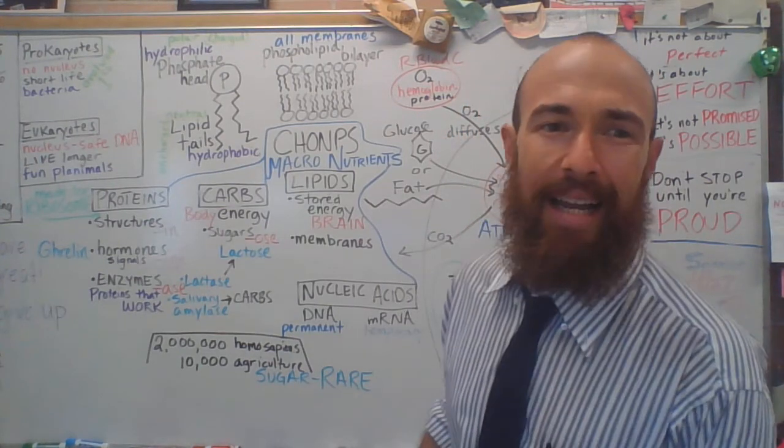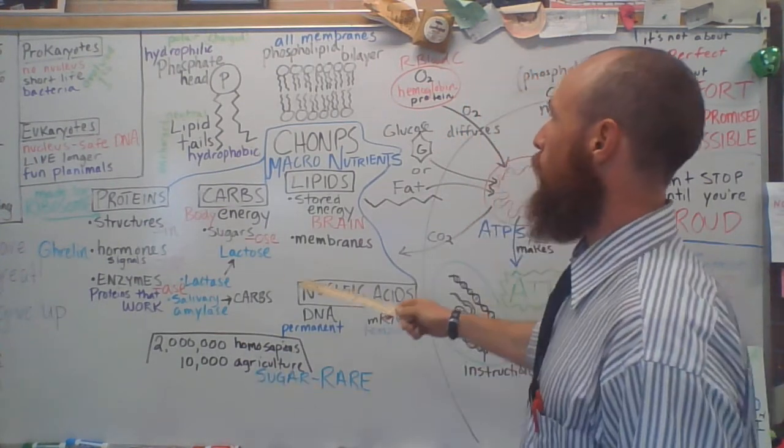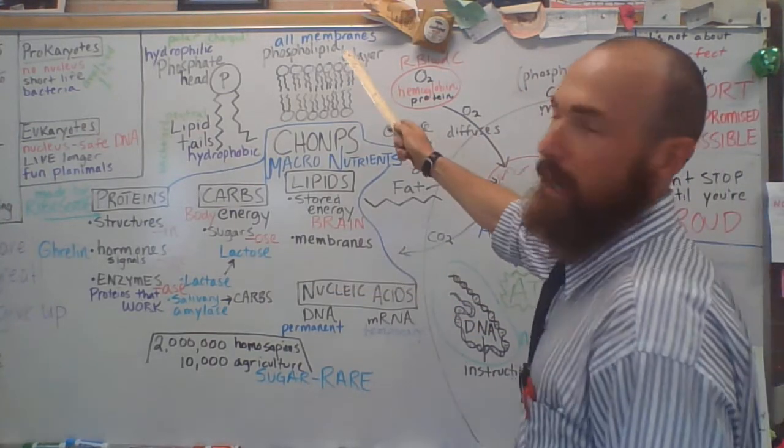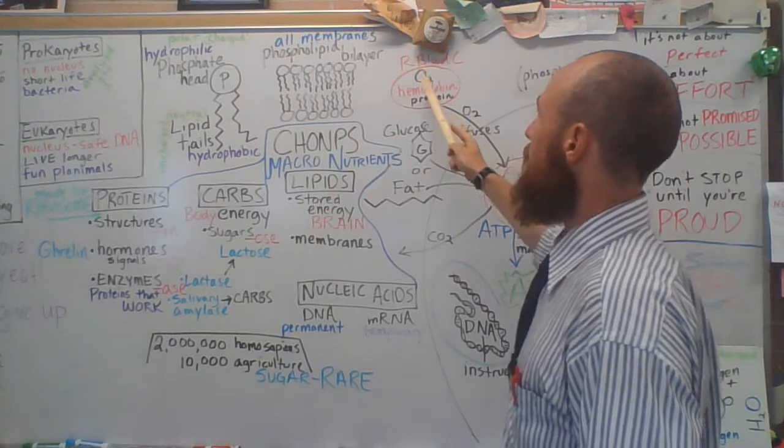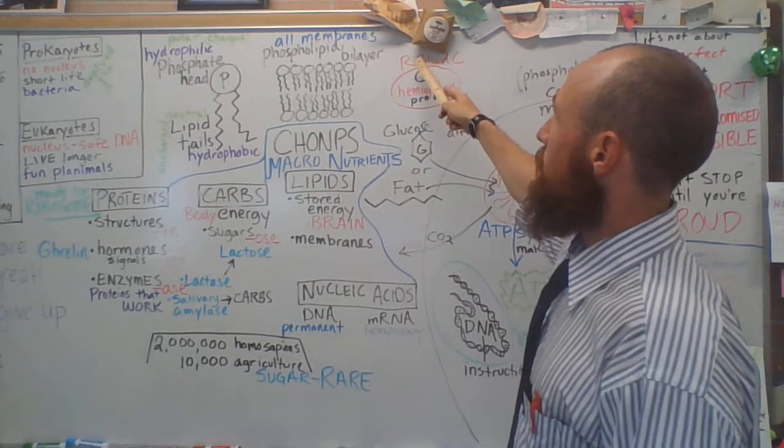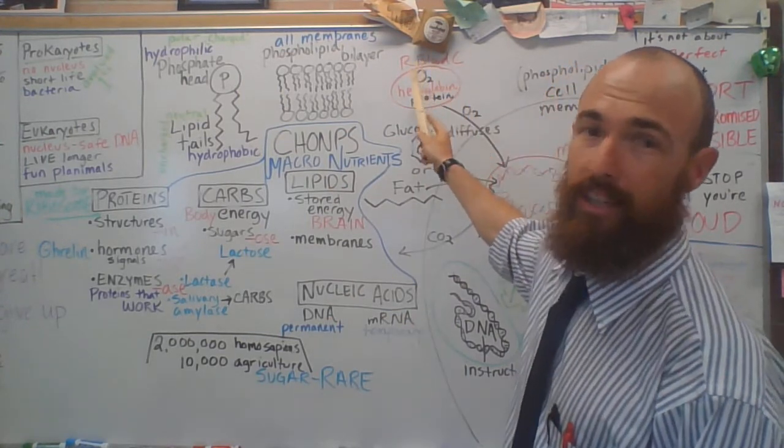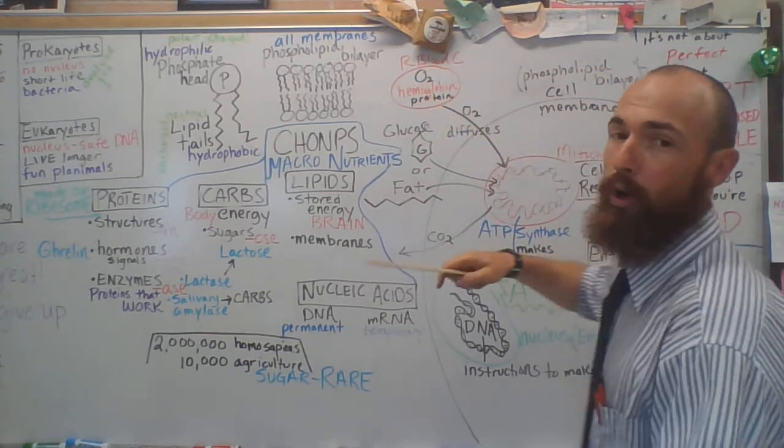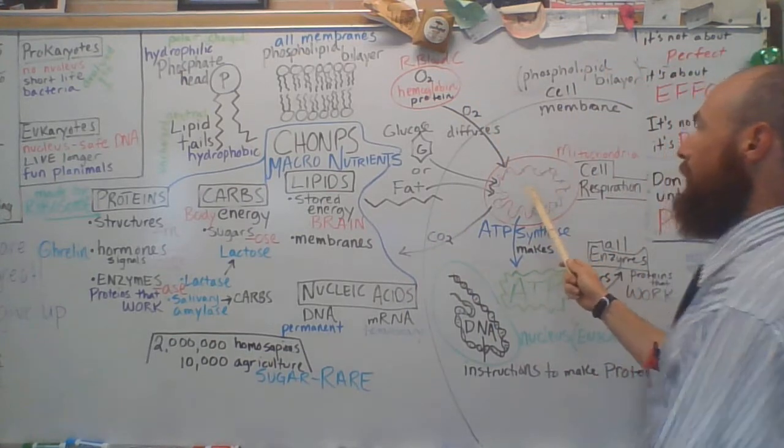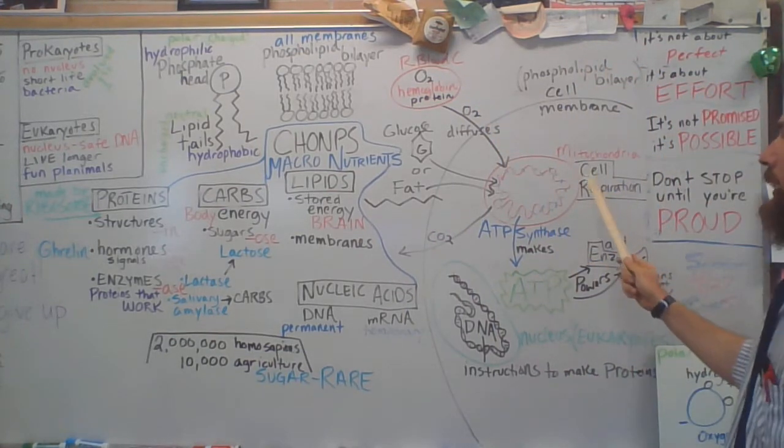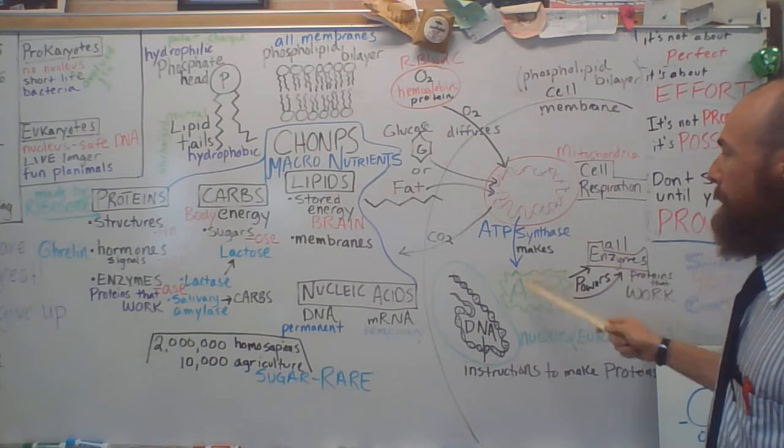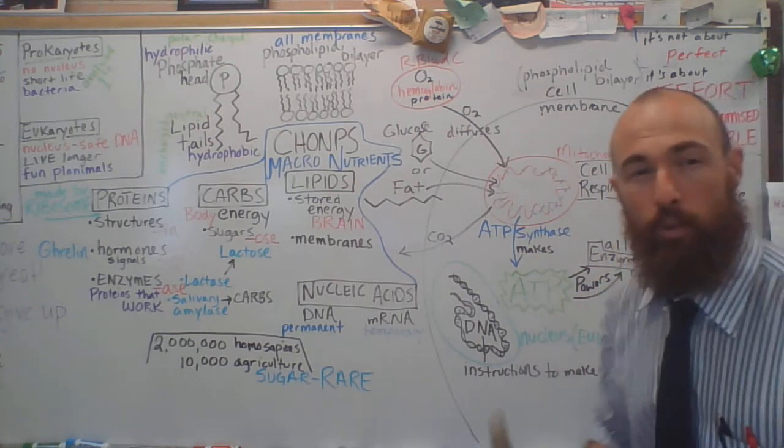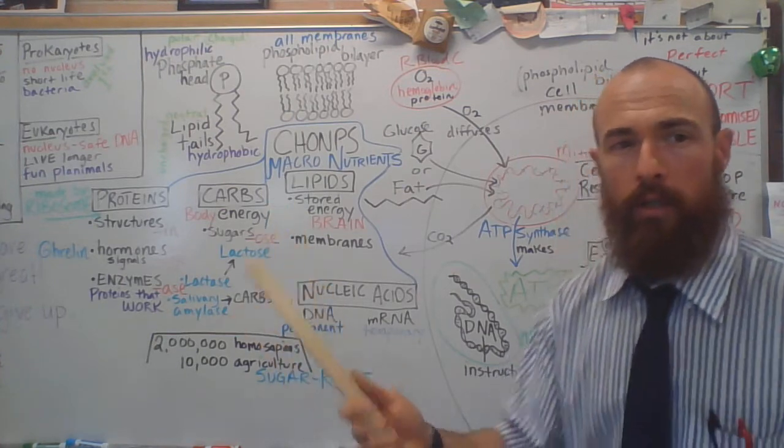This one is about why do we eat? So we got our last one of why do we breathe and we got some review over here for that. Breathing gets oxygen into the lungs with the diaphragm. Oxygen then diffuses into the bloodstream via the red blood cells, specifically the hemoglobin protein holds that oxygen and then the heart pumps throughout the body. Oxygen goes to the mitochondria where cell respiration occurs, ATP synthase making ATP our energy molecule to power all of the enzymes which are proteins that do work. And if you can't do work, you can't do much.